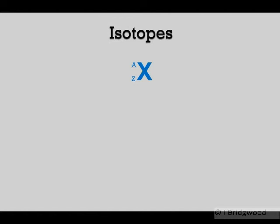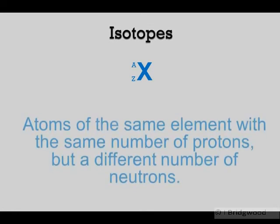For example, if Z equals three, the element has got to be lithium, and therefore that symbol will be Li. But isotopes of the same element may have a different A number.